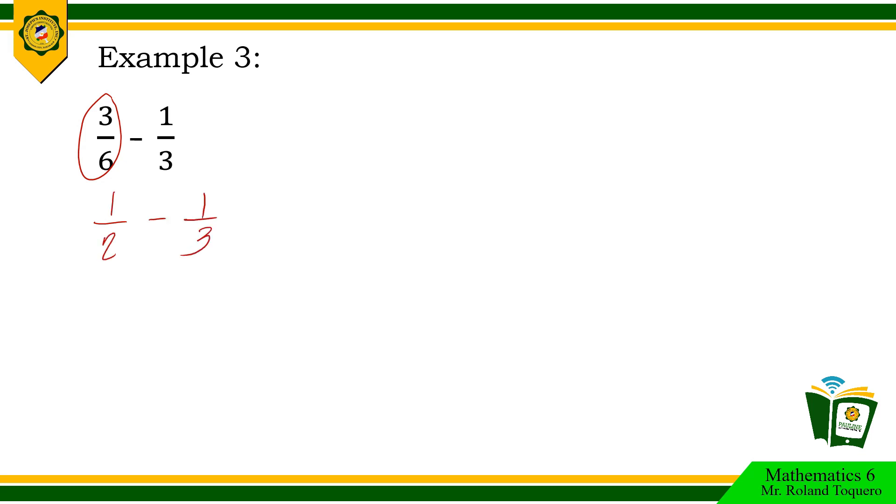Use the same process in addition of simple fractions. Simply change plus to minus. Cross multiply. 1 times 3 equals 3. Minus. 2 times 1 equals 2. All over. 2 times 3 equals 6.